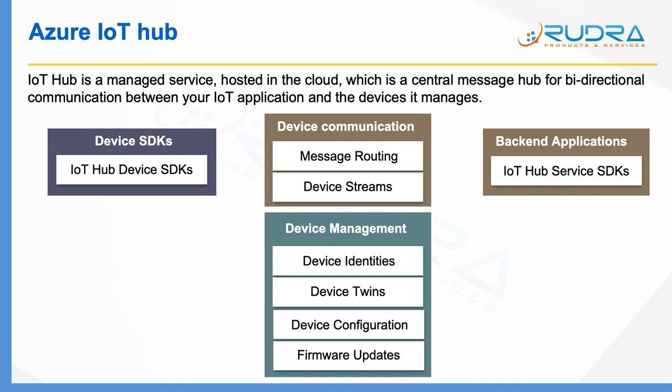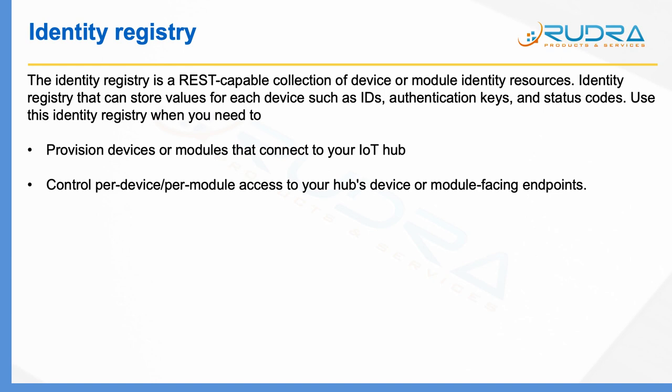Let me take you through device identities first. Identity registry is a REST-capable collection of devices or module identity resources. Identity registry can store values for each device, such as IDs, authentication keys, and status codes. Using this identity registry, you can provision devices or modules that connect to your IoT Hub, and also control per-device, per-module access to your hub's device or module-facing endpoints.